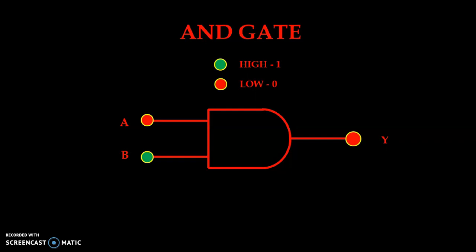Now it is 0,1 — A input is at low level and B input is at high level — so we again get low output. Now it is 1,0 condition, so again output is at a low condition. And now with 1,1 both the inputs are at high level and we get high output. This way we can simulate our AND gate — as per the truth table we have four possible different conditions to verify the output.